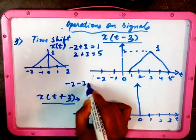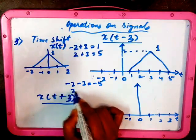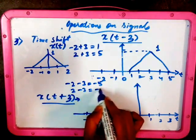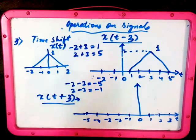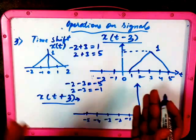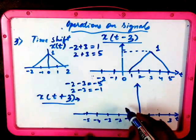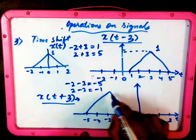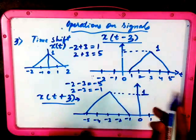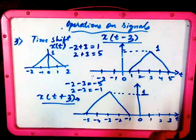So -2 minus 3, you get -5, then +2 minus 3 is equal to -1. So your signal is ranging from -1 to -5 towards the left side of your axis. So here from -1 to -5, amplitude does not change, it remains as it is 1. Only the time is going to shift.